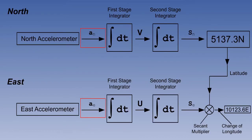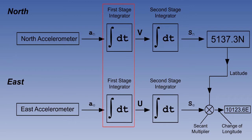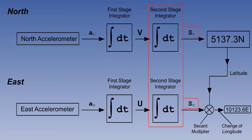This would be disastrous. The integrators would not know that these false accelerations were really components of gravity and would start integrating them, thereby generating false velocities. A constant acceleration would very rapidly build up into a very large velocity — think what happens when you hold the accelerator pedal down on your car. These rapidly increasing velocities would then be passed to the second stage integrators where they would very rapidly build up into distances gone. We would have a runaway system, all whilst the aircraft is still on chocks. This must not be allowed to happen. The solution is to keep the accelerometers level.